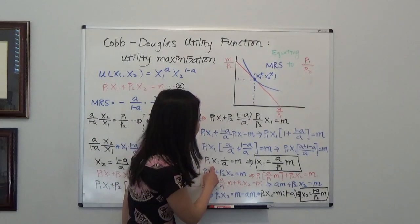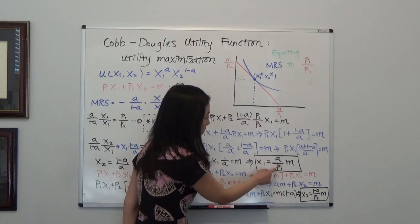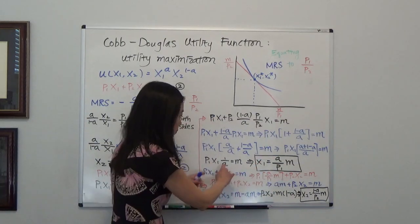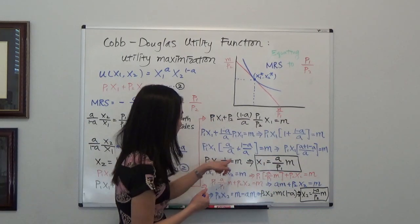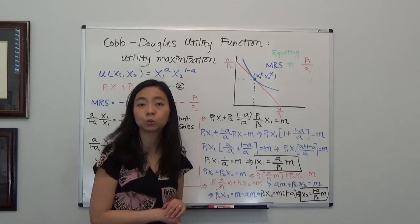So I'm able to find x1. So the optimal x1 will be equal to a divided by p1 times m. I'm just multiplying both sides by a and divide both sides by p1. And I can find x1.